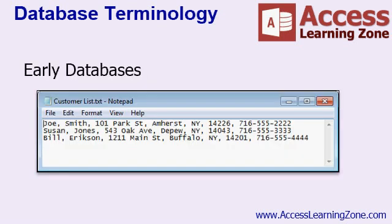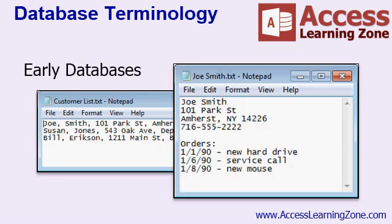When the first computers came along, the earliest databases were really nothing more than glorified text documents. They were great at storing information and they certainly made searching and sorting easier. However, they lacked many features we take for granted today, such as the ability to recognize relationships between the different types of data. For example, you could have a list of customers with some basic details, but if you want to look up information on their purchases, you would have to look in a different file.